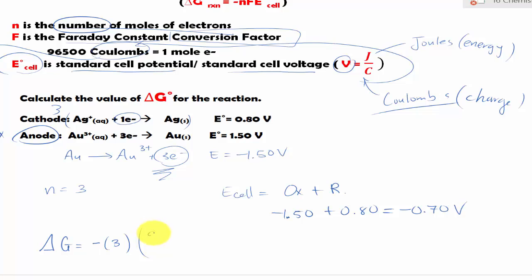So that's why we use just the number 3. We multiply by F, or the Faraday constant, 96,500 coulombs over 1 mole of electrons. Times the E°_cell.